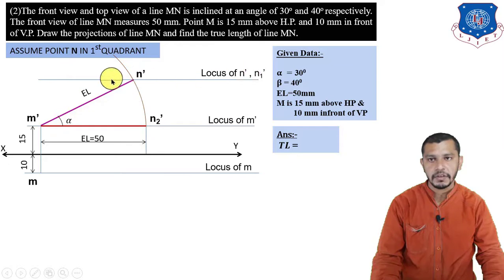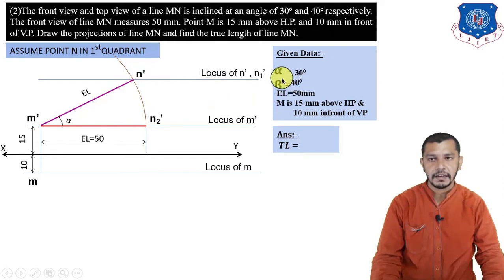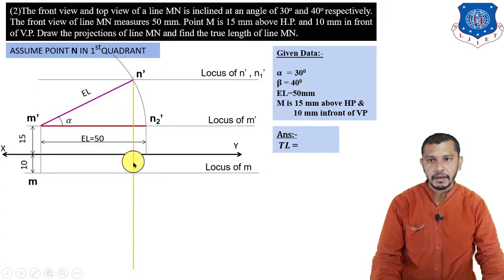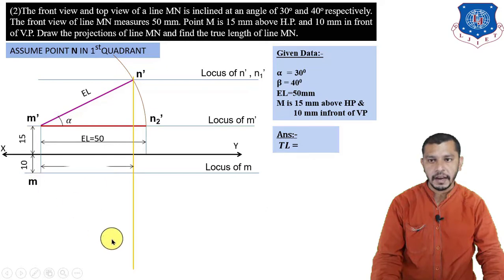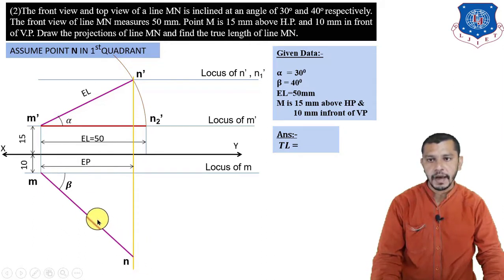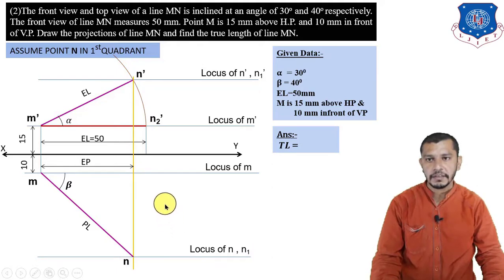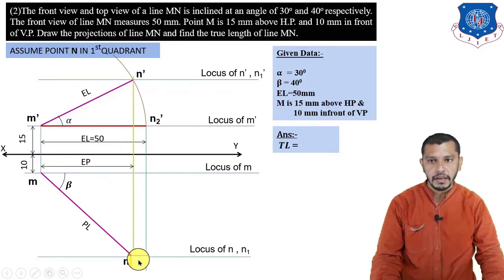Draw the locus of N-dash; N1-dash will also lie on this locus. Now using beta = 40°, draw a projector from N-dash. Draw a line inclined at 40° from M — this gives the plan direction. The plan of point N lies on this projector below the XY reference line. Draw a line inclined at 40° from M; this is the locus of N1. Draw a straight line from N2-dash up to the locus of N to get N1.